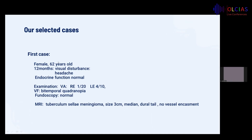The first case is a 62-year-old female complaining for 12 months of visual disturbance and headache, with normal endocrine function. On examination, visual acuity was 1/20 on the right and 4/10 on the left. Visual field showed bitemporal quadranopia and fundoscopy was normal. MRI showed a tuberculum sellae meningioma, 3 cm, midline, with dural tail, without vessel encasement.